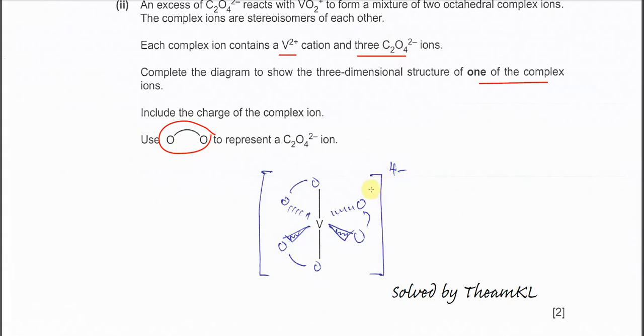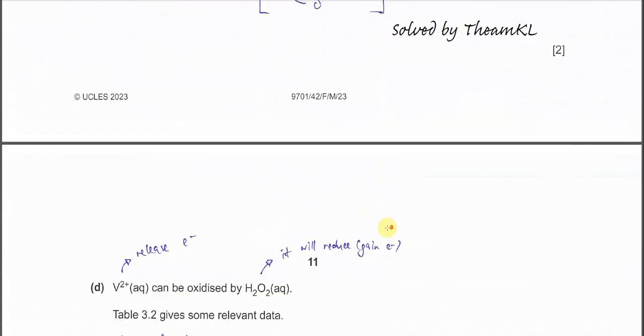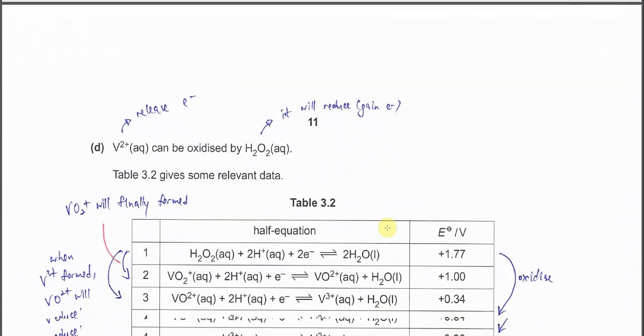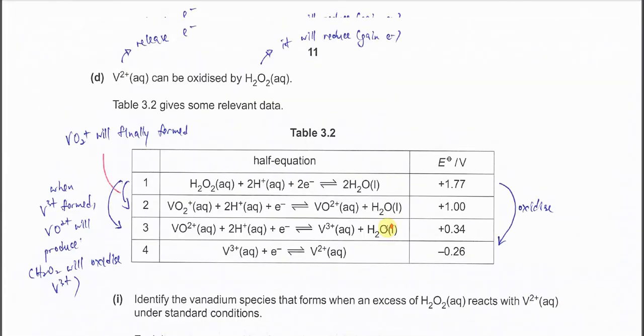But in this question, you just need to draw one of it. So just draw this 3D diagram with the three bidentate ligands. This one, this one, and this one. Remember to put the correct charge because it's two positive and this one is three times two negative. Therefore, overall charge is four negative.